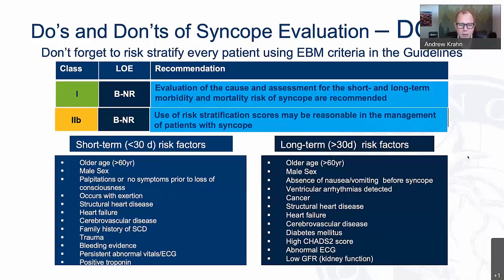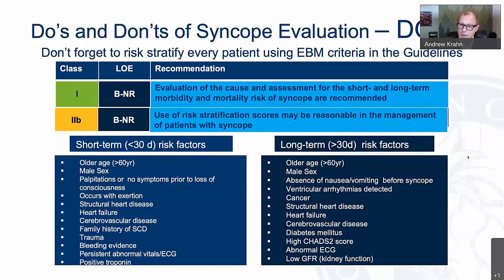When gauging the prognostic implications of syncope, look at the comorbidity list. If you're looking for a diagnosis, you'll need something more specific to the details within the history to establish whether this is hypotension, arrhythmia, or life-threatening arrhythmias like ventricular arrhythmias — where hospitalization, monitoring strategies, and electrophysiology consults are the mechanisms to get to the bottom of it.